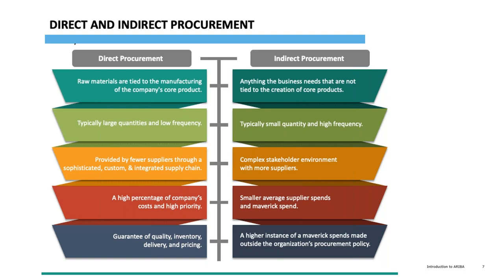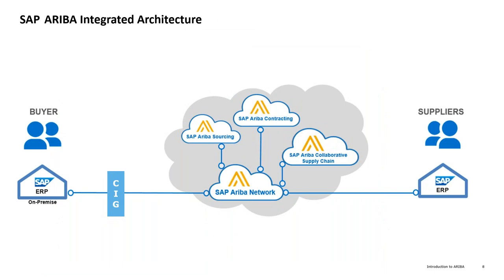Ariba is well-suited for indirect procurement. However, Ariba can now also be used for direct procurement through Ariba Supply Chain Collaboration. This is the integrated architecture: in the Ariba portal you have Ariba Sourcing, Ariba Contracting, Ariba Supply Chain Collaboration, and in the Spend Management portal you get Ariba Sourcing, Ariba Contracting, and Ariba Buying and Invoice. The Ariba Network links all outgoing and incoming documents.